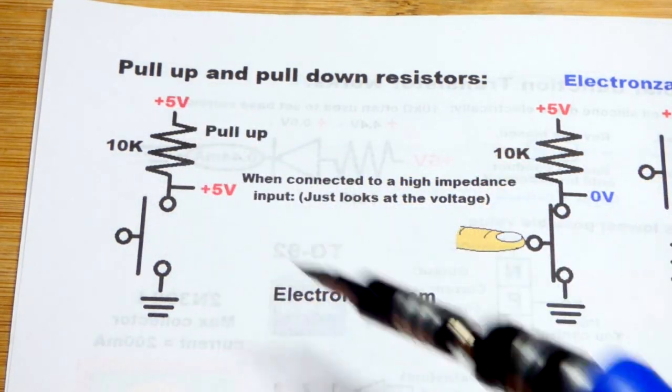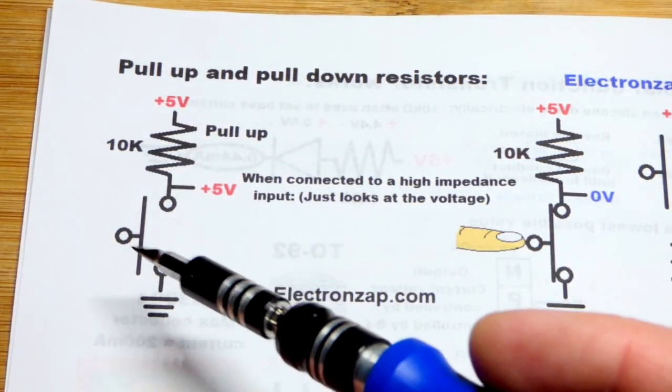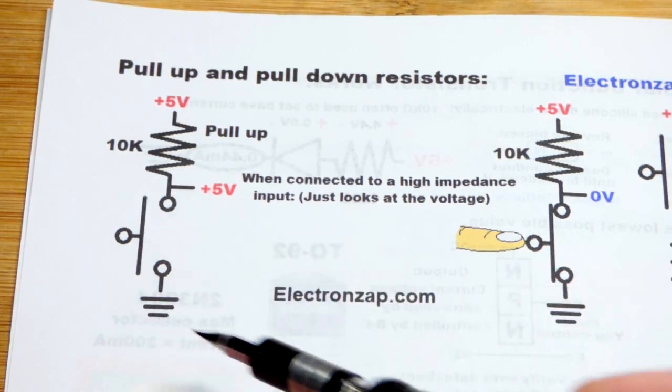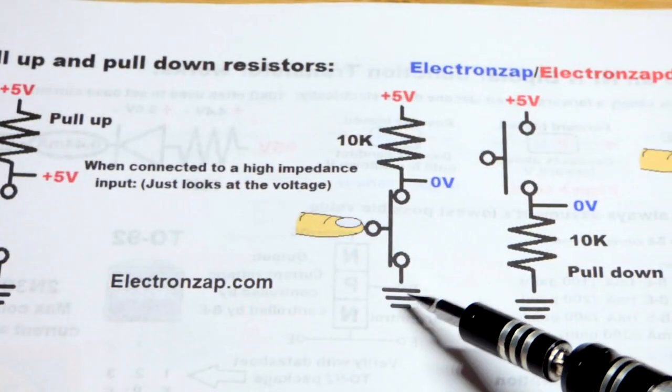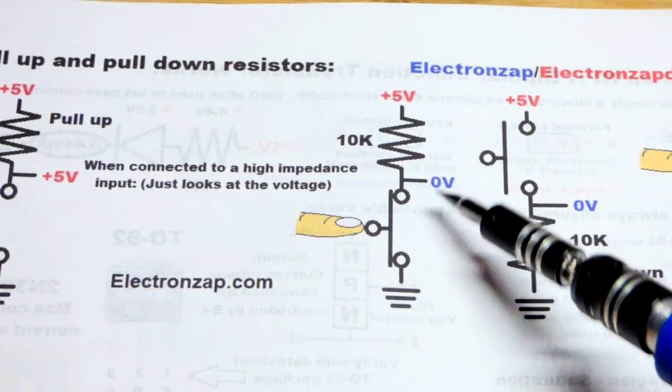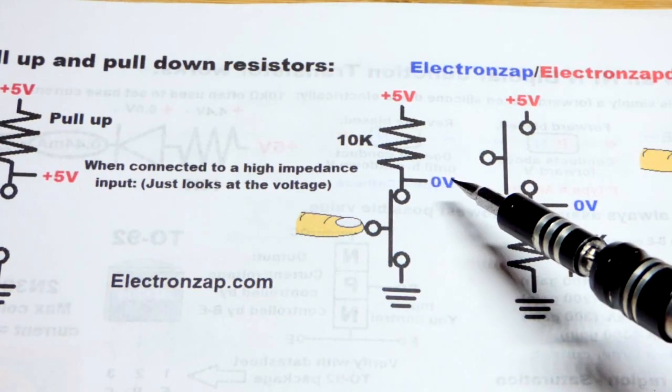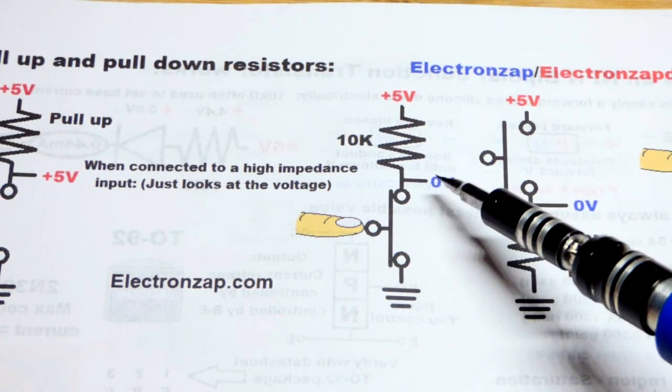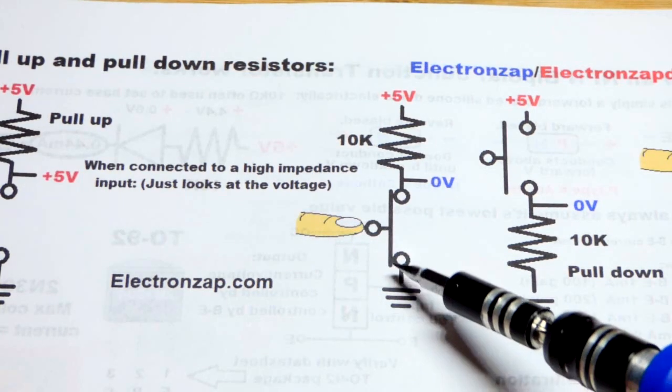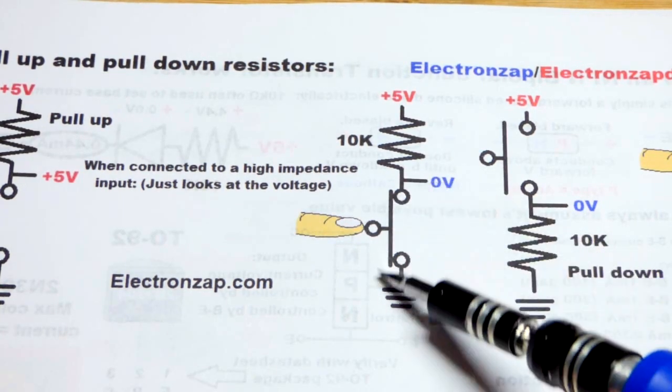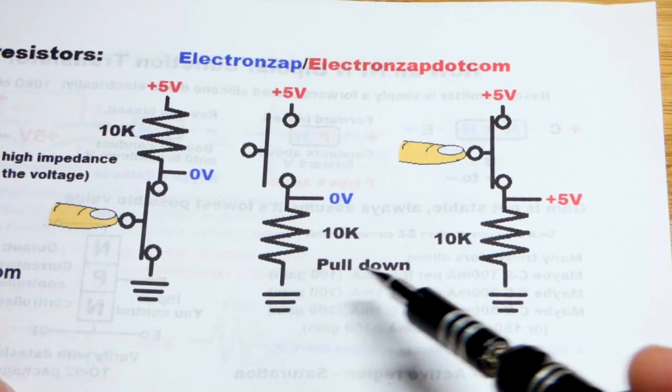Now when we close the switch, that makes a direct connection to ground, so the input is looking at the voltage in relationship to ground. When you go to ground, that's a 0 volt difference. So you close the switch and you have a definite 0 volts.